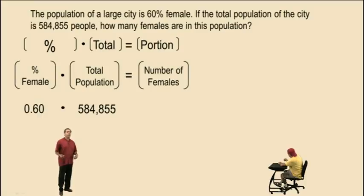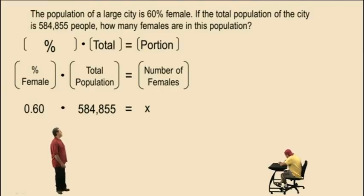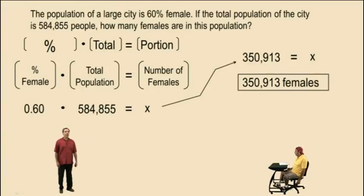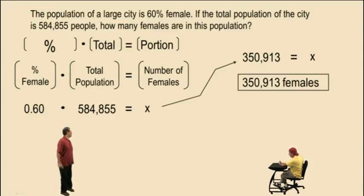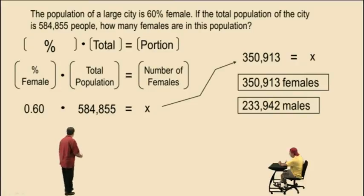We are trying to find the number of females, so that quantity is represented by the variable x. To calculate x, we simply multiply 0.60 times 584,855. Charlie, what did you get? 350,913. So that's our answer: 350,913 females of the total population. To find the males, all you have to do is subtract the number of females from the total population, and the number of males is 233,942. The sum of those two values gives you 584,855.